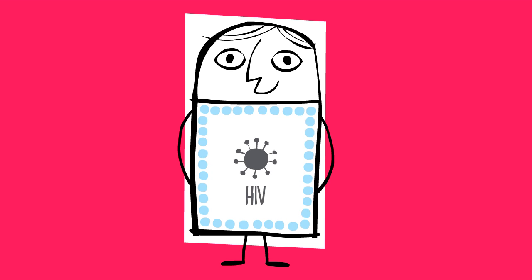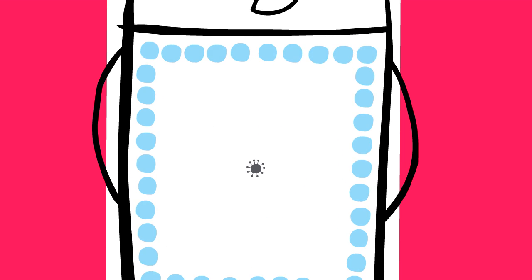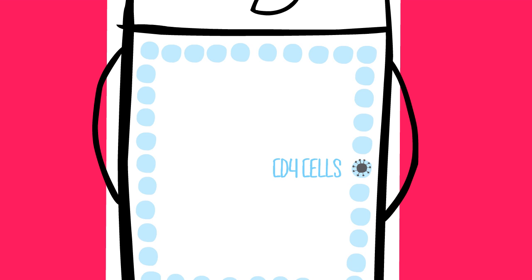HIV is a virus which attacks a human's immune system, making it more difficult for the body to fight infections. HIV stands for Human Immunodeficiency Virus. Once the HIV virus has entered the body, the virus will target one of the specialised cells in the immune system called CD4, which help organise the body's response to fight against foreign cells.